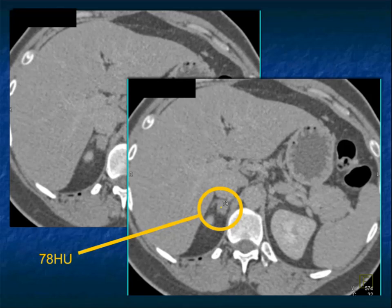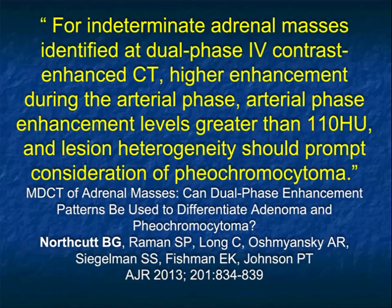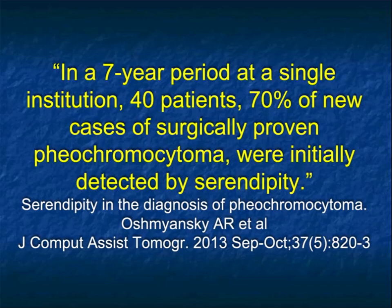But when you remember that the lesion measured over 160 Hounsfield units on early phase imaging, that means it's a pheochromocytoma. Adenomas do not enhance above 120 Hounsfield units - they're typically in the 70 to 90 HU range, rarely over 110, but surely not over 120. Higher enhancement during the arterial phase greater than 110-120 HU should make you think of pheo. The lesion washes out but the peak enhancement is the key.